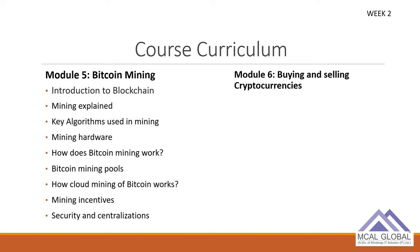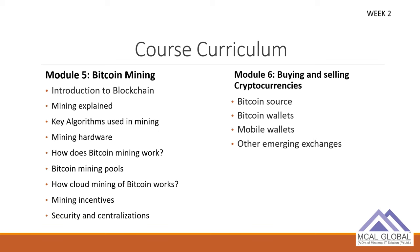We'll cover security and centralization when buying and selling cryptocurrencies. Just like Bitcoin, there are many other currencies — last check, more than 1500 different coins are available, though the prominent ones are fewer than 20. We'll see how you store these coins in wallets and other emerging exchanges.